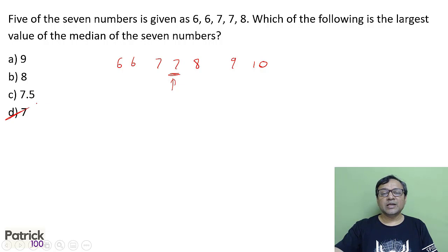So to take the largest value of the median, take the two values which are remaining as very large. So automatically the median will be 7. The largest value of median will be 7. If they want to ask for the smallest value, we would have taken two smallest values less than 6, and the median would have been 6. But since they want the largest value, it will be 7.